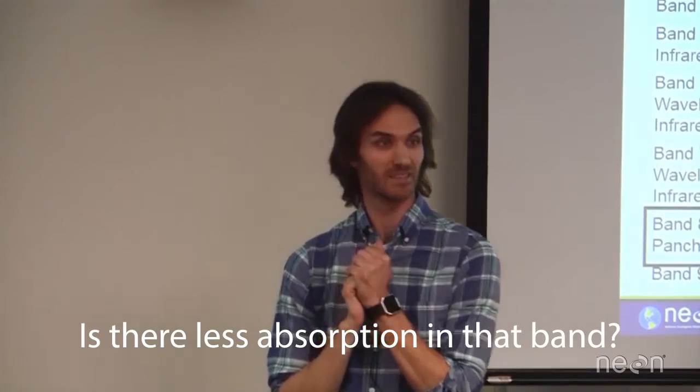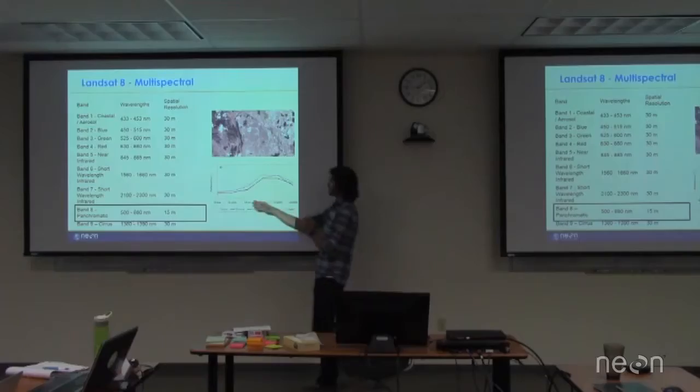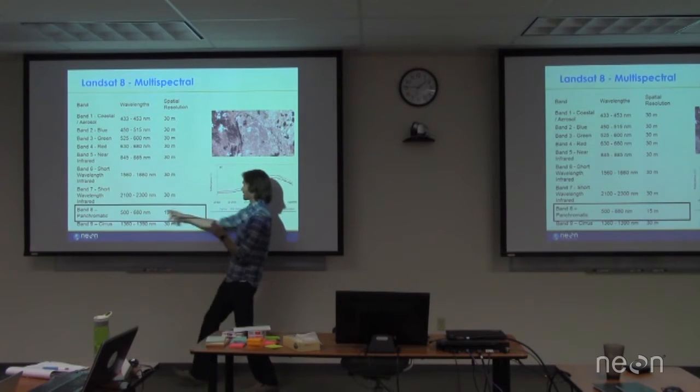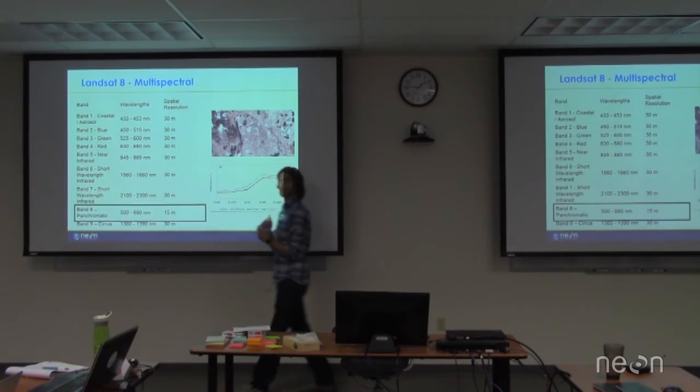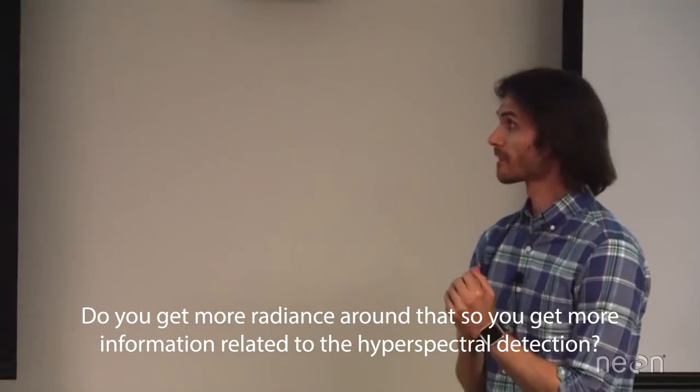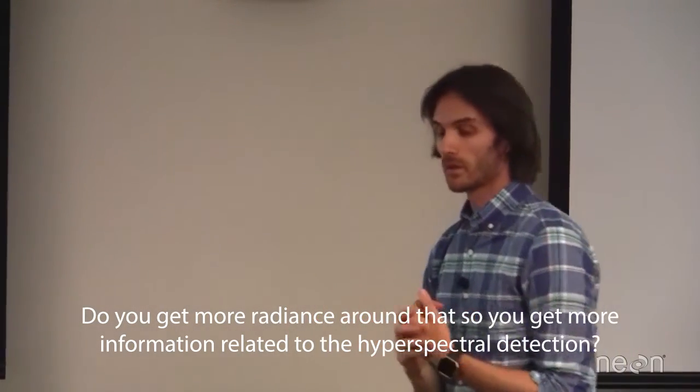There's less absorption in that? Yeah, so there is a little bit less in the visible. But this, see, this actually covers the same values as these here. Then you get more radiance around that, so you get more information coming into the hyperspectral detector. Yeah, exactly. That's essentially what's happening.